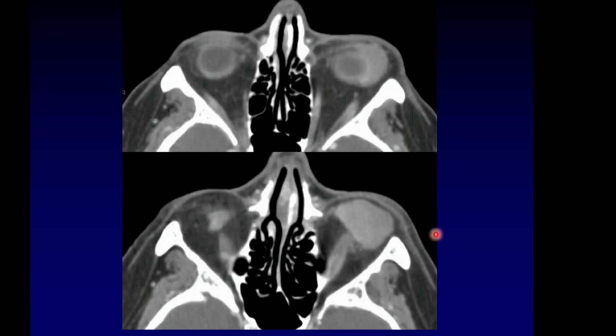Lymphoma presents as a uniformly enhancing mass. Notice how polite this lymphoma is with respect to the globe — it's conforming around the globe, working its way around it, not eating the globe. It has a very benign appearance overall, but it is a malignancy. Lymphoma, when it arises in this location, is usually polite like this and does not erode surrounding structures, but still be suspicious in this circumstance.